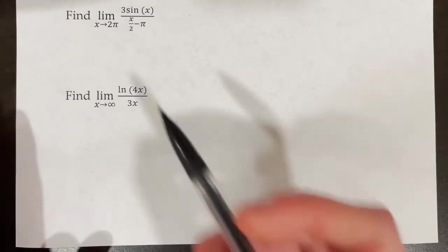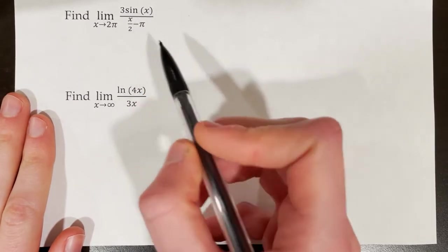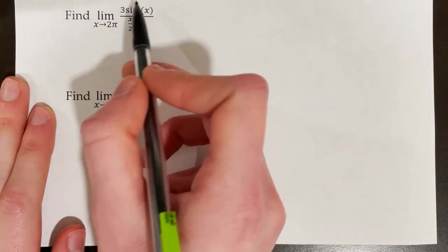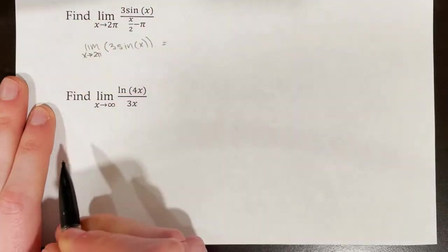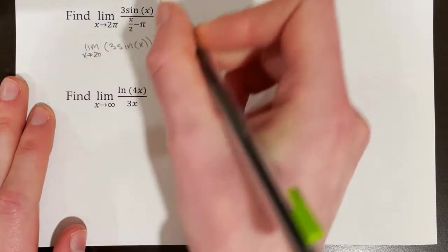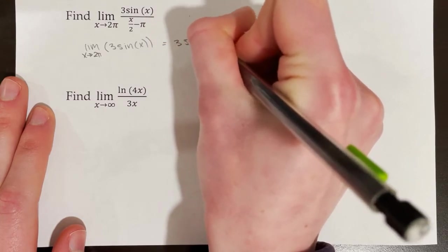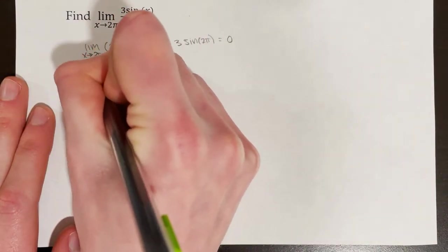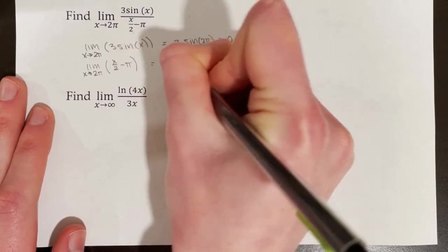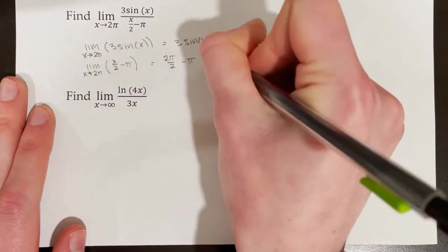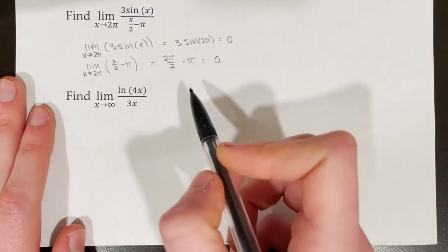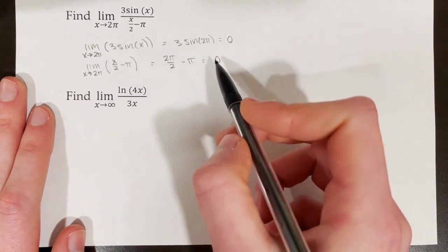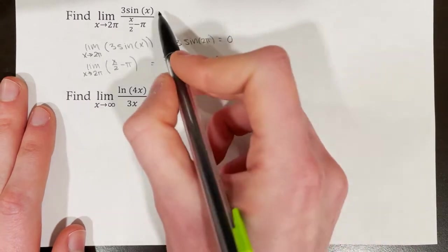Let's practice another example: find the limit as x approaches 2π. First, test the numerator and denominator separately. The limit as x approaches 2π of 3·sin(x): since sin(2π) = 0, we get 3·0 = 0. For the denominator, using direct substitution: (2π)/2 − π = π − π = 0. So we can use L'Hôpital's rule because we get the indeterminate form 0/0. We write: this produces the indeterminate form 0/0.